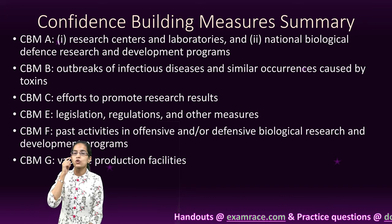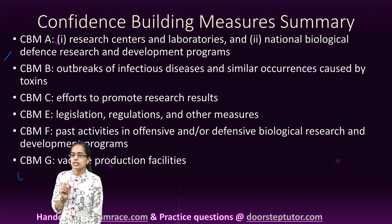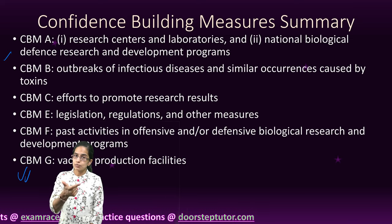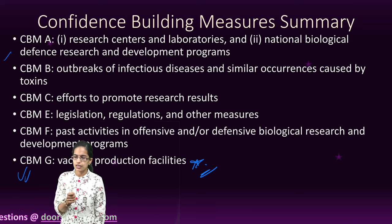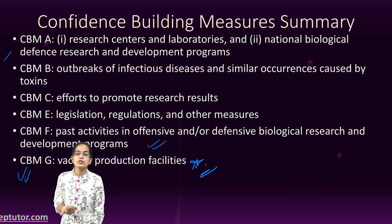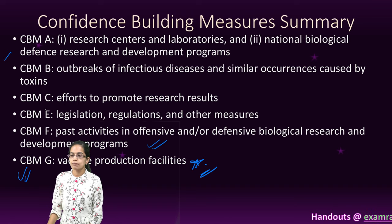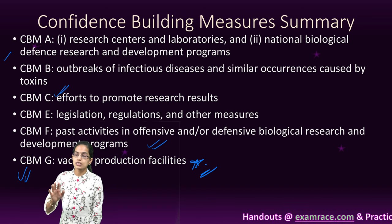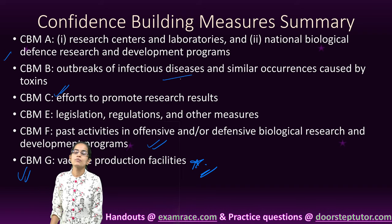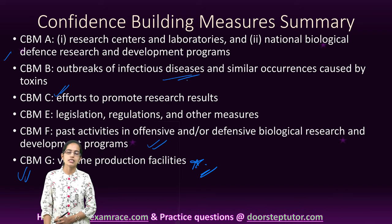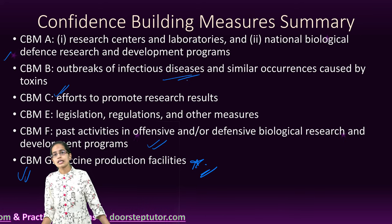The confidence building measures are categorized from A to G. Category G talks about vaccination production facilities, which is very important. Category F talks about past activities in biological research. Category C talks about research results that should be promoted. Category B talks about outbreaks of any kind of infectious diseases that have occurred or are occurring in the region.